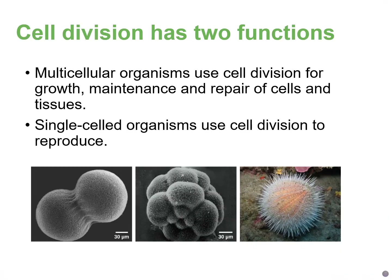So why do cells divide? It depends on the type of organism we're looking at. If we're looking at multicellular organisms, the reason cells may divide is to get bigger — growth — to maintain the number of cells because there are always cells dying and there's a turnover rate, and then we also need to repair cells and tissues. If you're looking at a single-celled organism, they use cell division in order to reproduce.